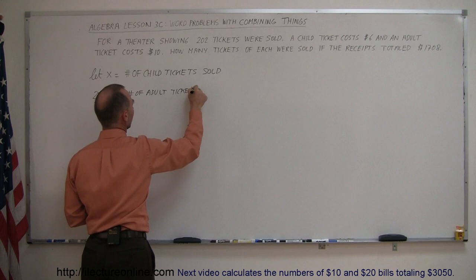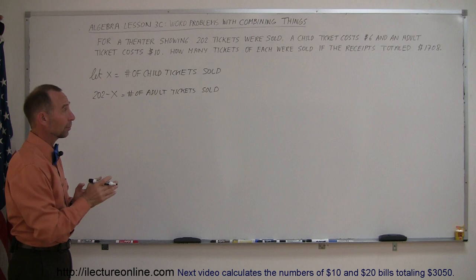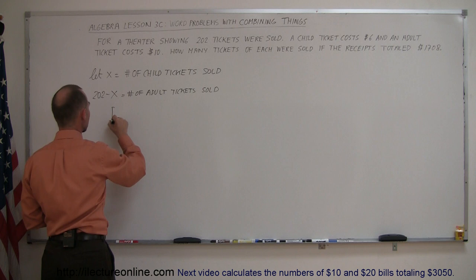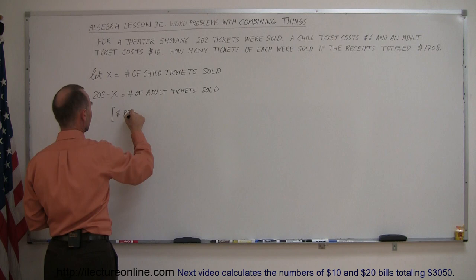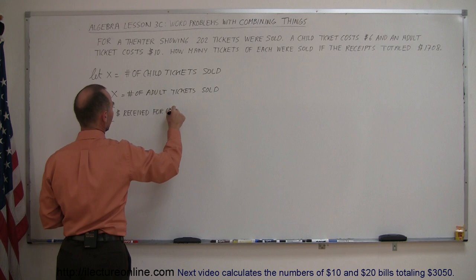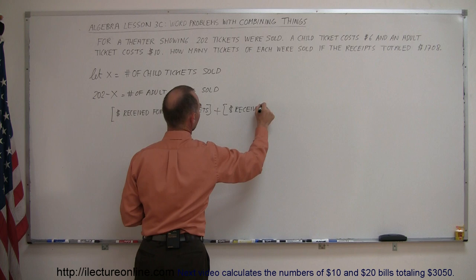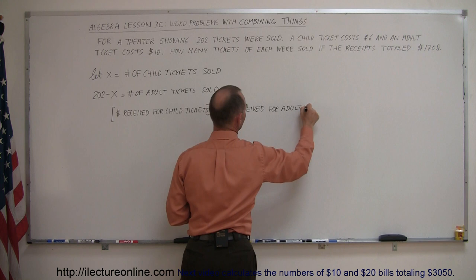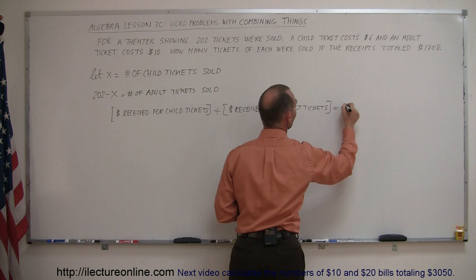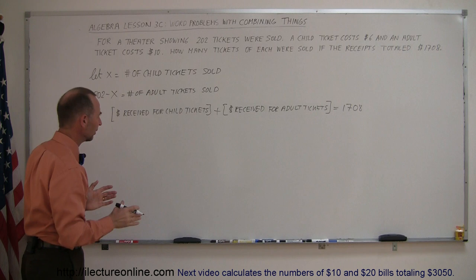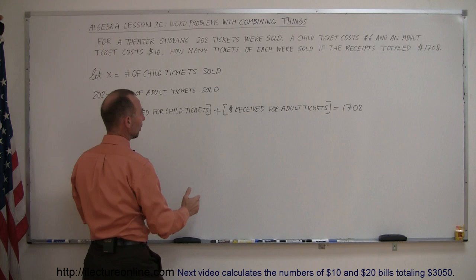Now that we have that well defined, we can go ahead and come up with an equation to help us solve the problem. We can say that the dollars received for child tickets plus the dollars received for adult tickets must total up the total amount of money that they received, which is $1,708. Notice how I write it out very long-handed, but it makes sense when you do this. This is the amount of money you receive for children's tickets, this is the amount of money you receive for adult tickets. Add them together, that should be the total amount of money you receive.